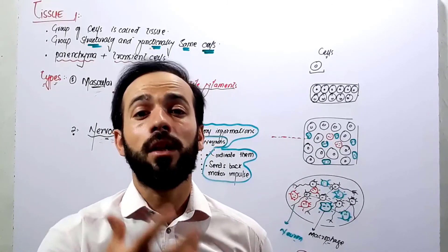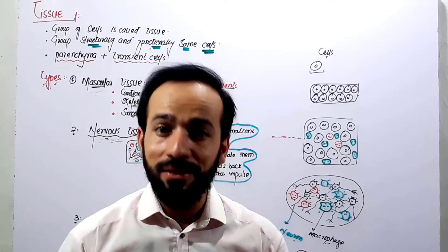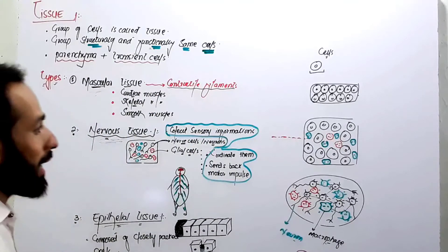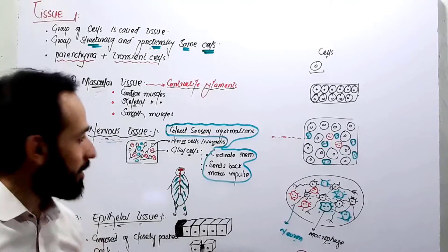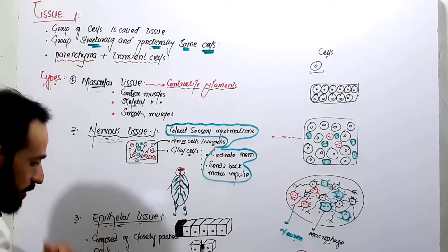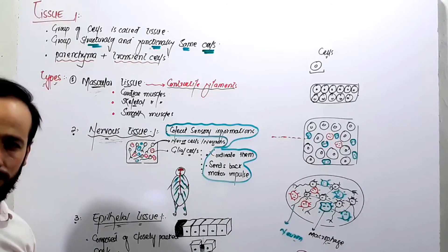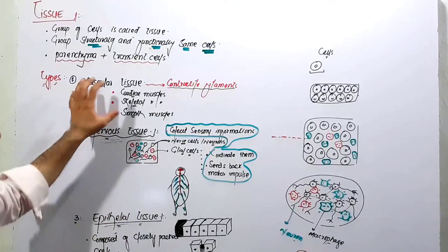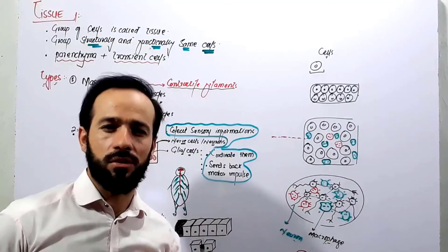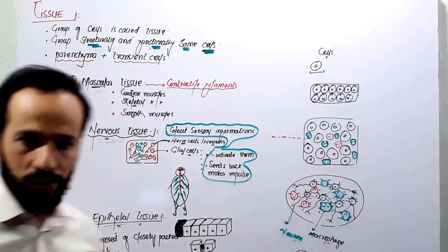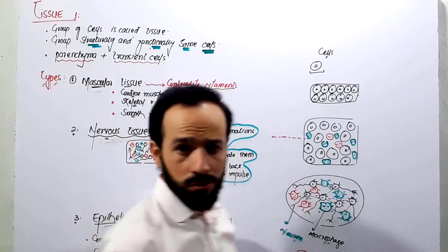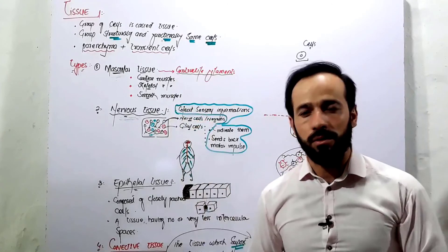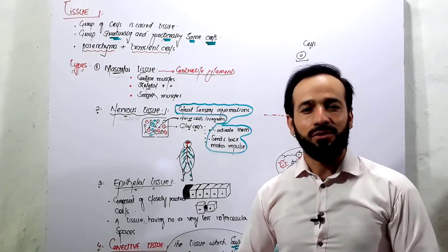These tissues also help in respiration and breathing, and nervous tissue and epithelial tissue make you aware of your body and serve protective and secretory functions. We will have separate detailed lectures on the structure, composition, and functions of each tissue. In the next lecture we will begin with the epithelial tissue and then move forward through all the tissues in detail.